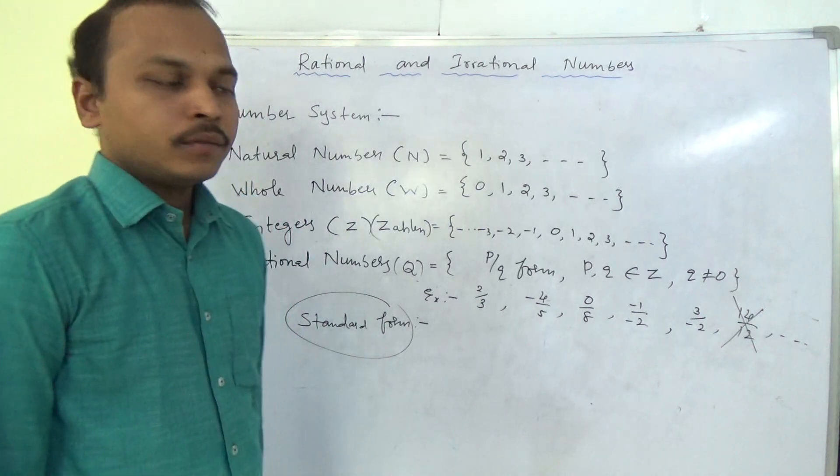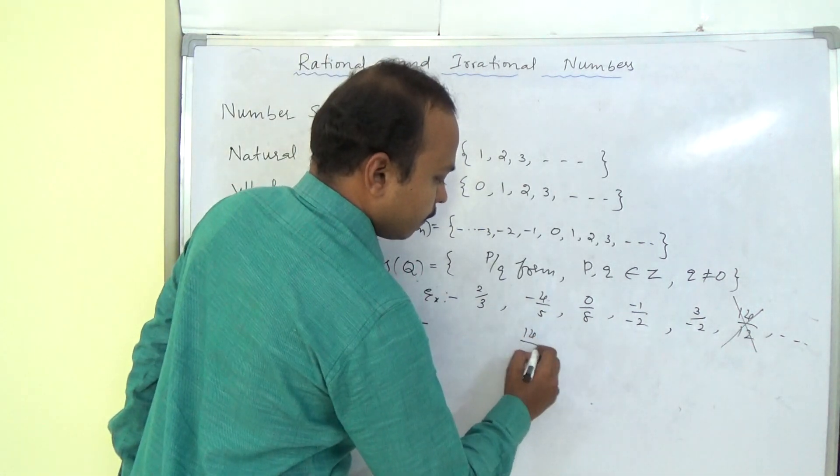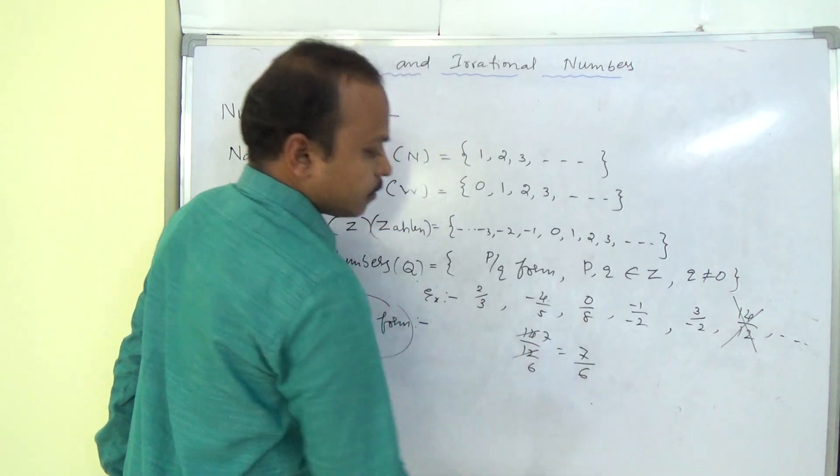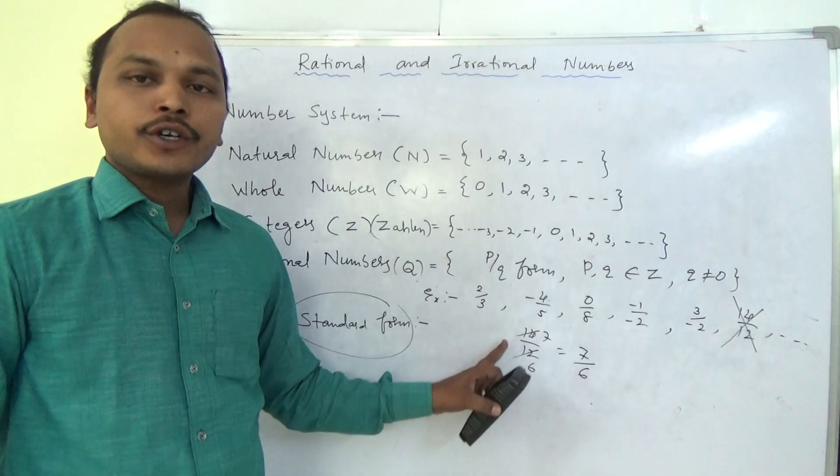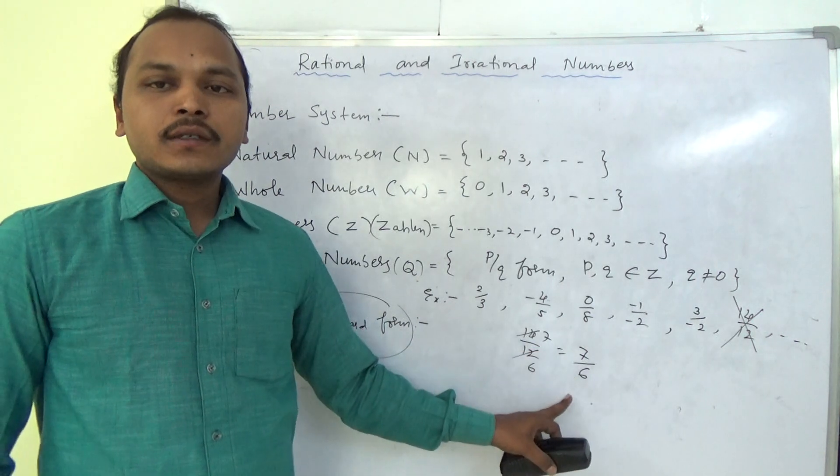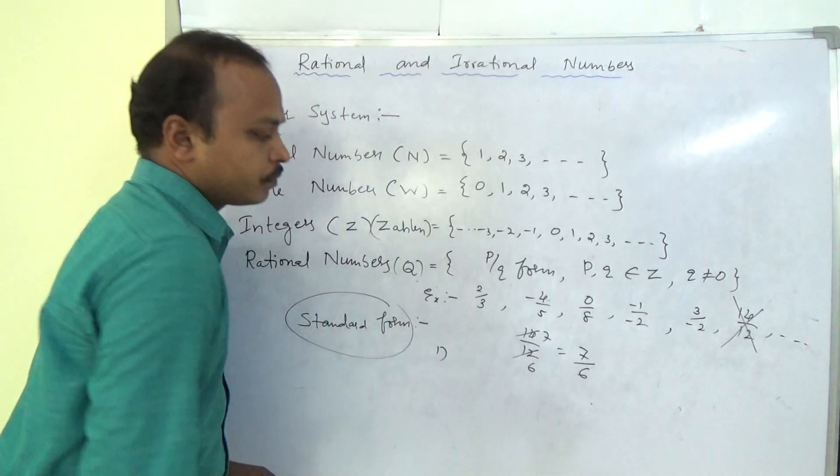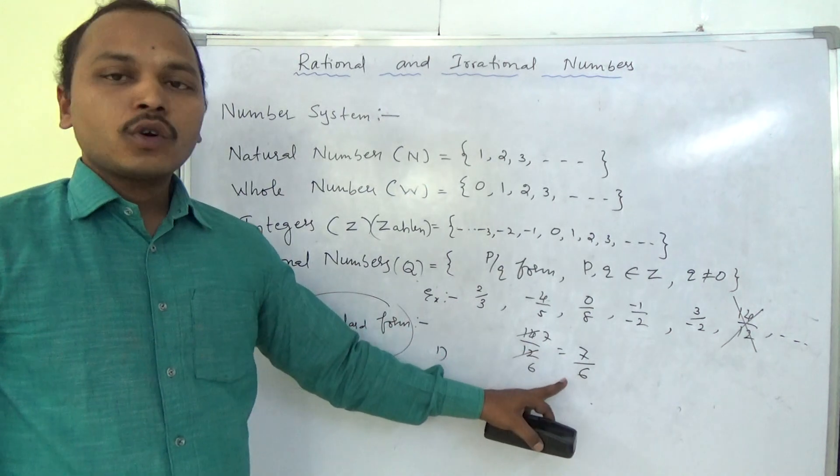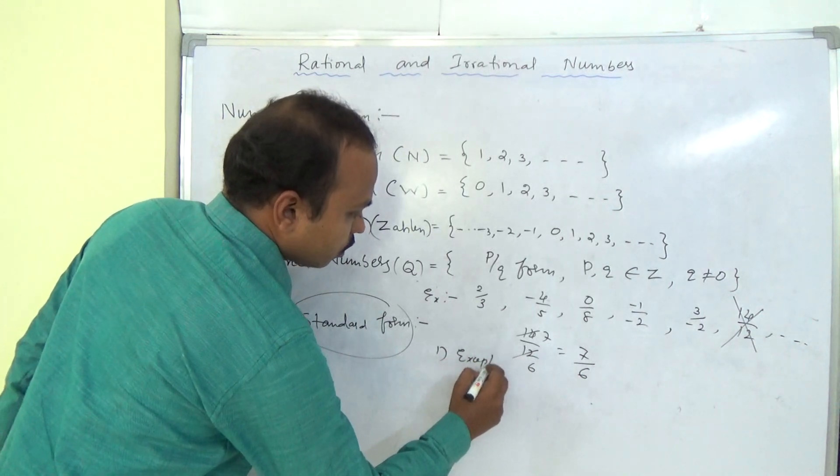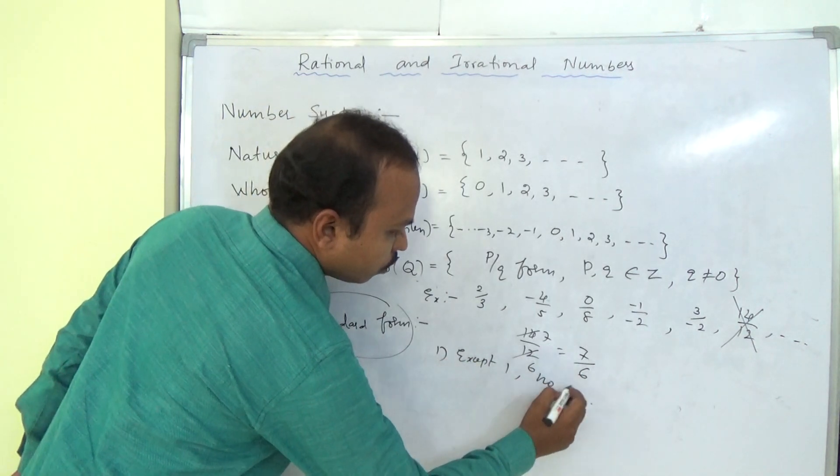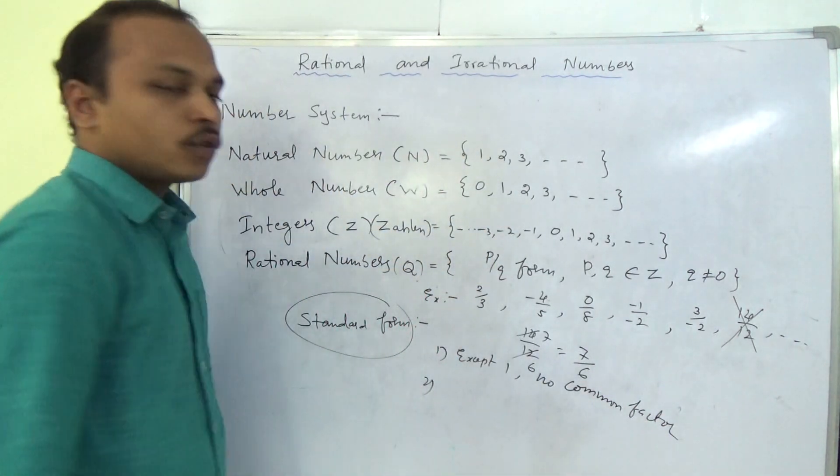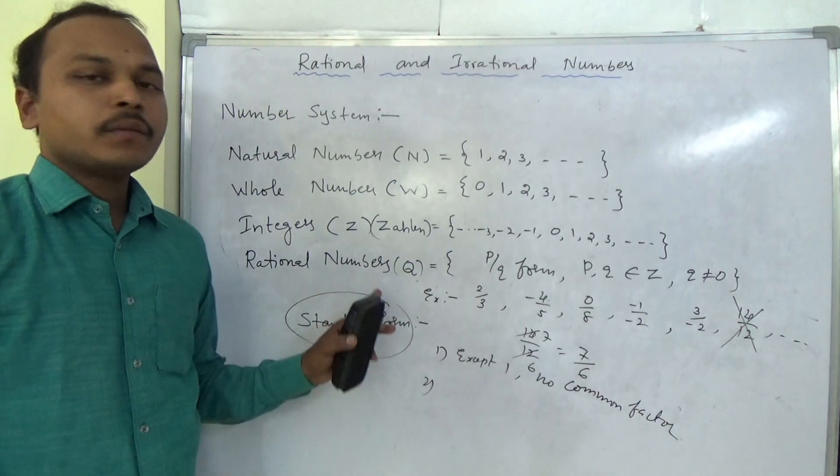1 is the common factor and 2 is also the common factor for 14 and 12. So this is non-standard form. We have to reduce it. How can we reduce it? 14 by 12. 2, 6 and 2, 7. 7 by 6. So 7 by 6 is nothing but 14 by 12. Both are equivalent fractions. So 7 by 6 is the standard form. First rule is 7 by 6 means no common factors except 1. Except 1, no common factor to make the rational numbers to standard form.